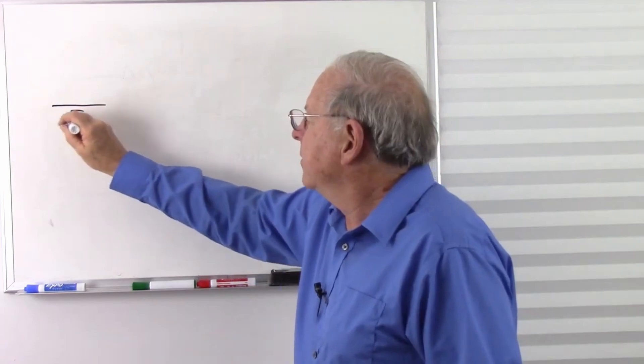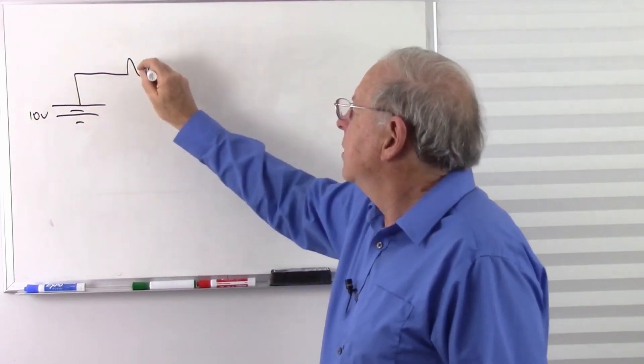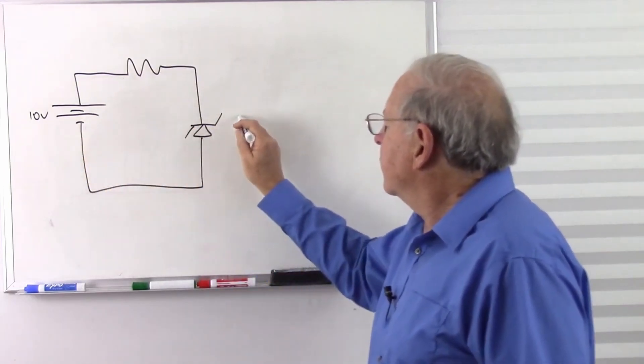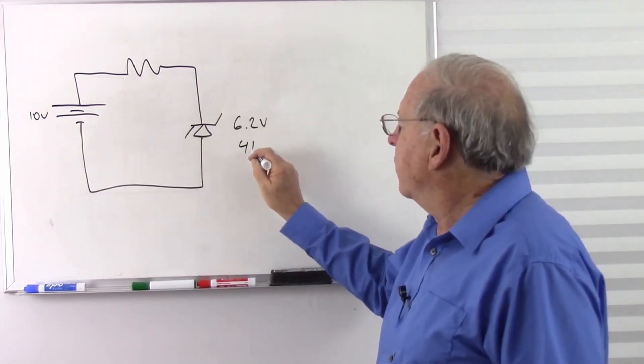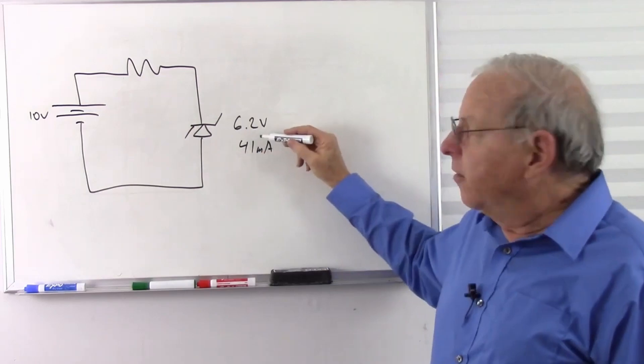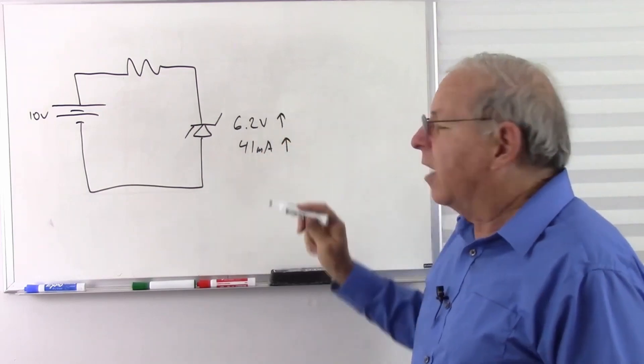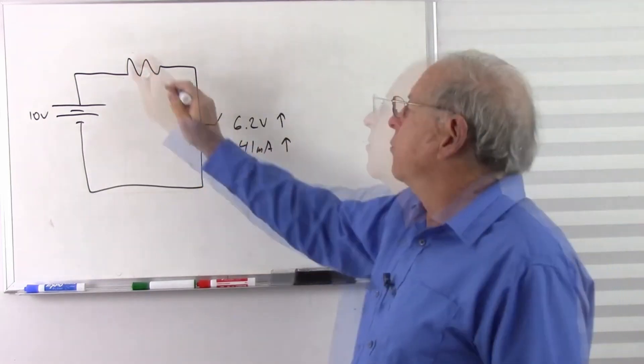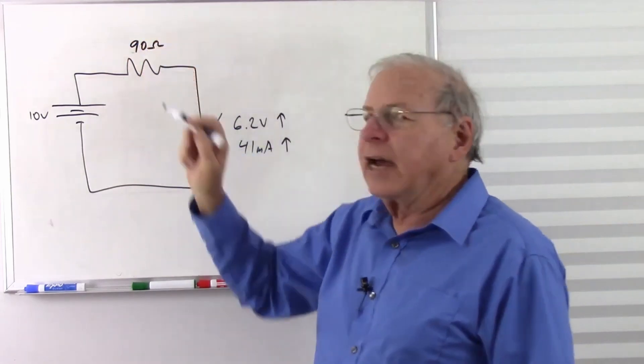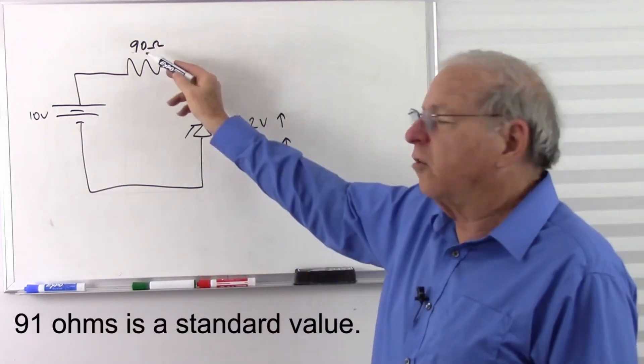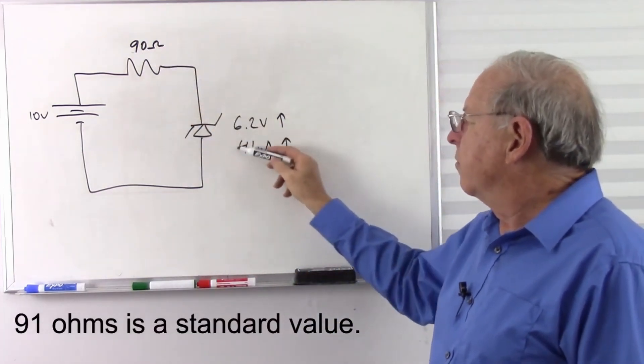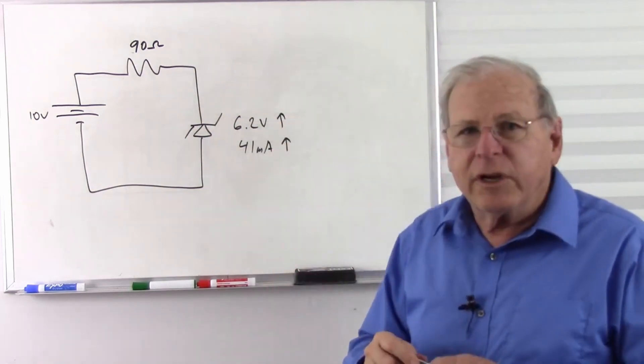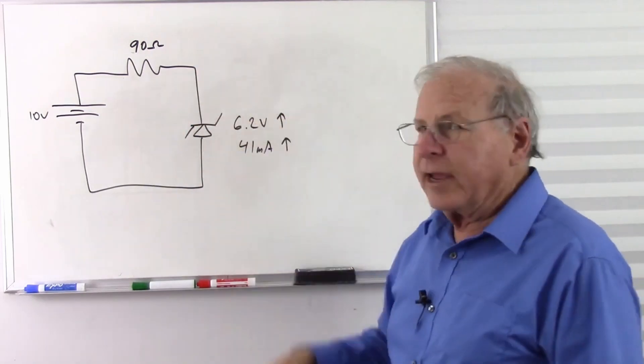Let's put our circuit back here. So 6.2 volts at 41 milliamps. If we go higher than 41 milliamps, this voltage is going to go higher, so it's no longer at its rated voltage. We want to stay as close to that as we reasonably can. This is going to be roughly 90 ohms. Can you find a 90 ohm resistor? You just get as close as you can so that this current is as close to the rated current as you can, and that will keep this voltage as close to the rated voltage. So the reason we don't use the maximum current is because then we don't get the rated voltage.